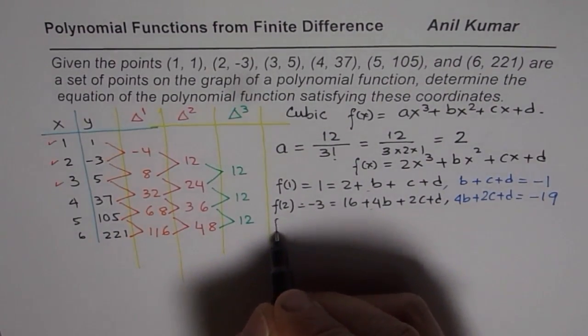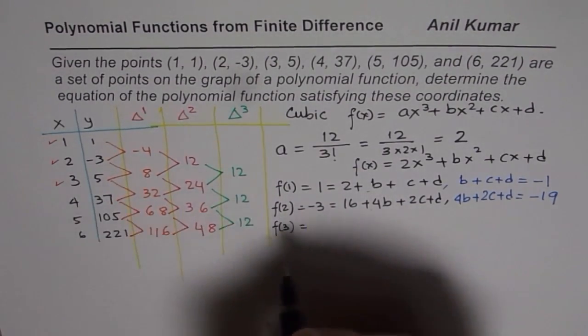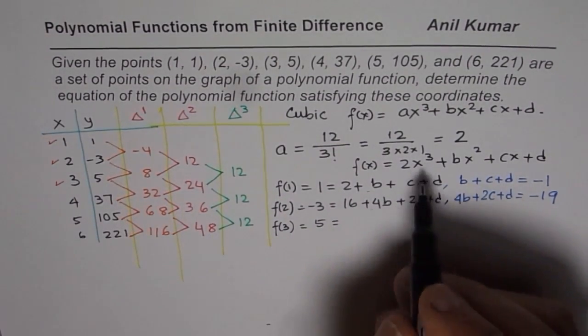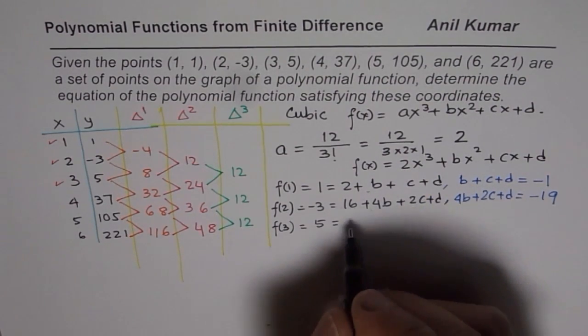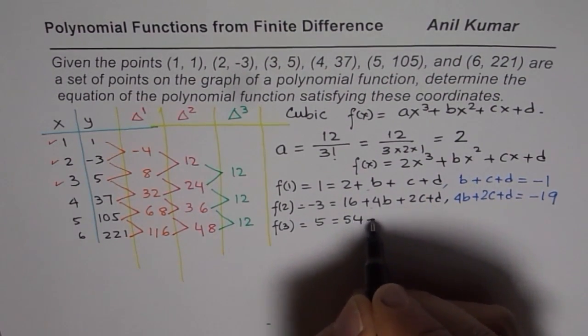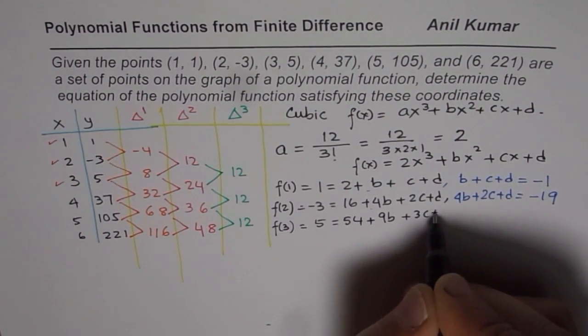And let us use one more equation. Since there are 3 unknowns, we need to use 3 points, that is f(3) this time. f(3) equals 5. 3 cubed is 27 and twice 27 is 54. So we get 54 here plus 9b + 3c + d.